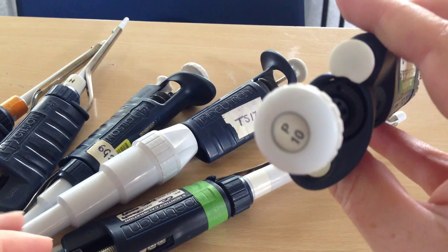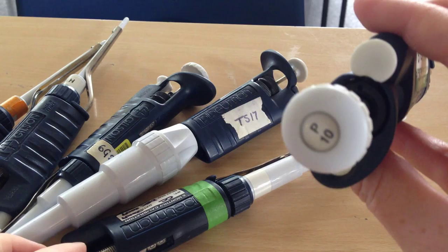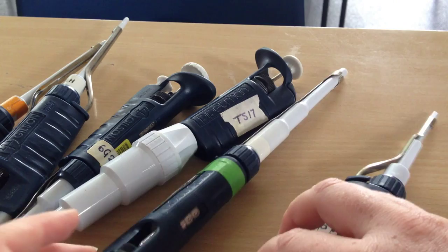So the first thing you need to be aware of is this number at the end here. That will tell you the accuracy or the amount that you can use the pipette for. So this is a P10, so we can use this for 1 microliter up to 10 microliters.